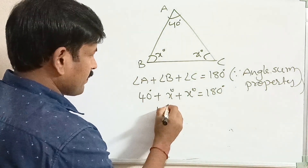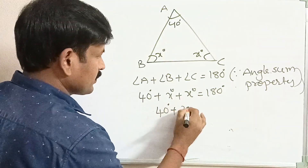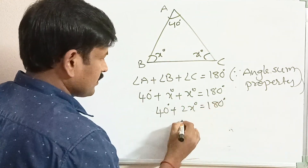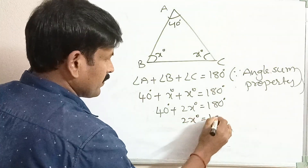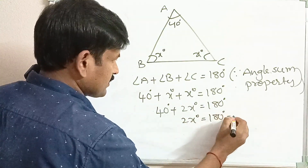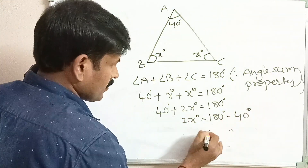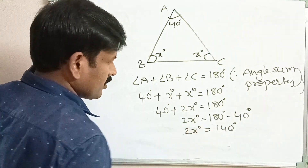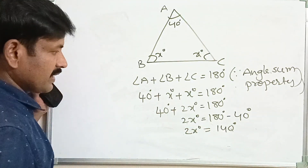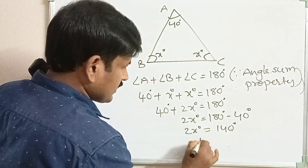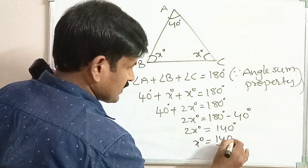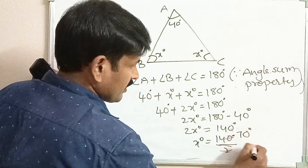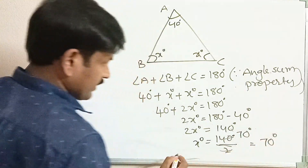So 40 degrees plus x plus x, which is 2x degrees, equals 180 degrees. Then 2x degrees equals 180 minus 40 degrees, which is 140 degrees. So 2x equals 140 degrees. Therefore, x degrees equals 140 degrees divided by 2, which equals 70 degrees.